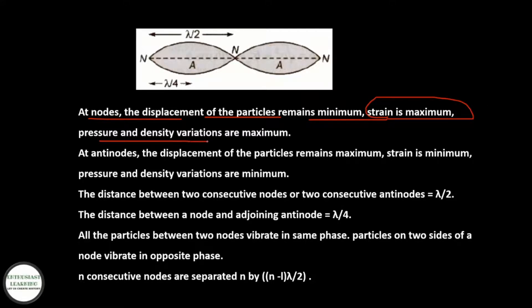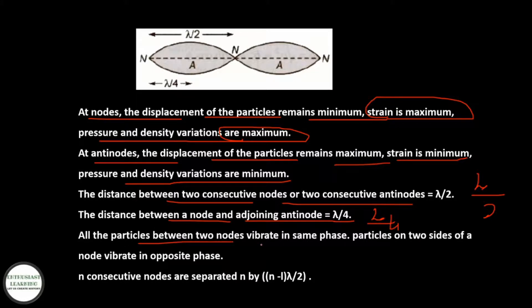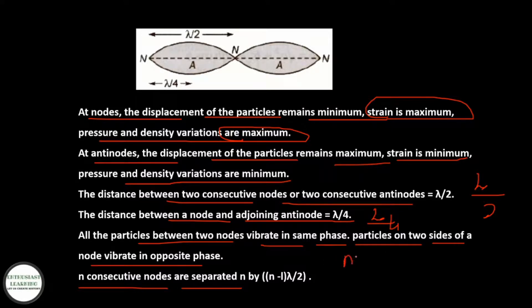At nodes, pressure and density variations are maximum. At antinodes, the displacement of the particle is maximum, strain is minimum, and pressure and density variations are minimum. The distance between two consecutive nodes or two consecutive antinodes is λ/2. The distance between a node and the adjoining antinode is λ/4. All particles between two nodes vibrate in the same phase. Particles on opposite sides of a node vibrate in opposite phase. N consecutive nodes are separated by (N−1)·(λ/2).